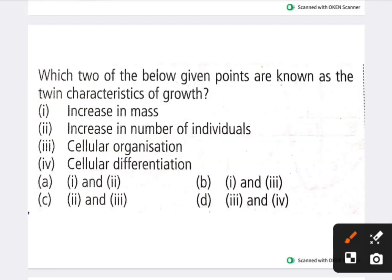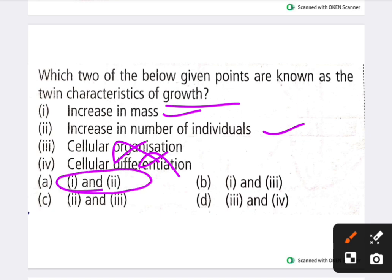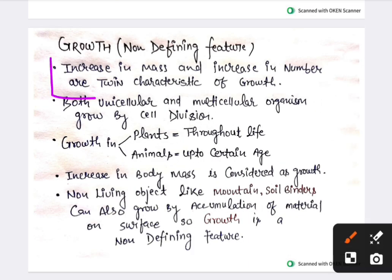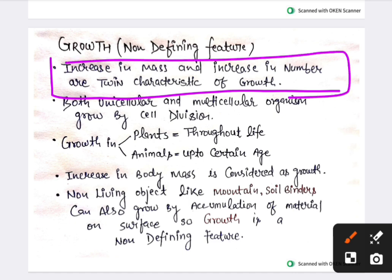Next question: which two of the following are known as the twin characteristics of growth? The answer is option A: increase in mass and increase in number of individuals are the twin characteristics of growth. Options like cellular organization and cellular differentiation are not correct. This NCERT line directly generated this question.